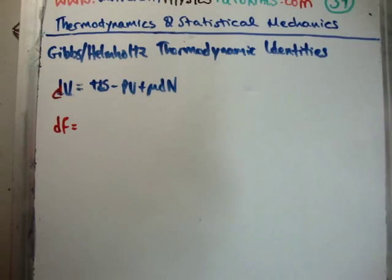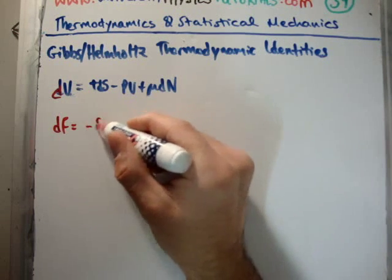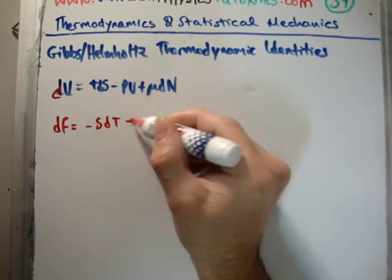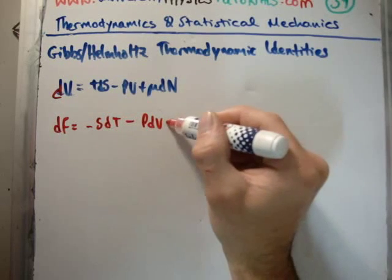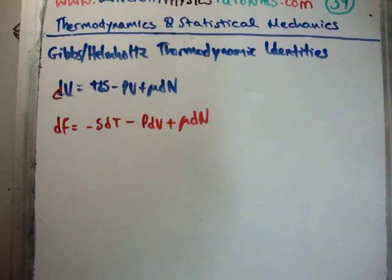Let's say if we wrote down dF. Like I said, the physicists would prefer to use the Helmholtz free energy, which is constant temperature, because that gives the extra degree of freedom with pressure. So dF, as we said there a moment ago, was minus SdT minus PdV plus μdN. Now let's look at the partial derivatives here.